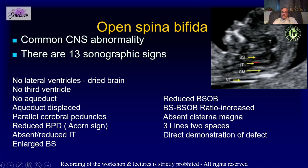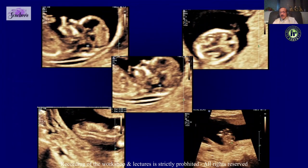Dr. Praveen has described almost 13 signs of spina bifida in the first trimester. In summary these include IT obliteration, increased brainstem-to-occipital distance, parallel cerebral peduncles, aqueduct shifted down or not seen. Of course you also need to look for direct signs of spina bifida or open neural tube defect.